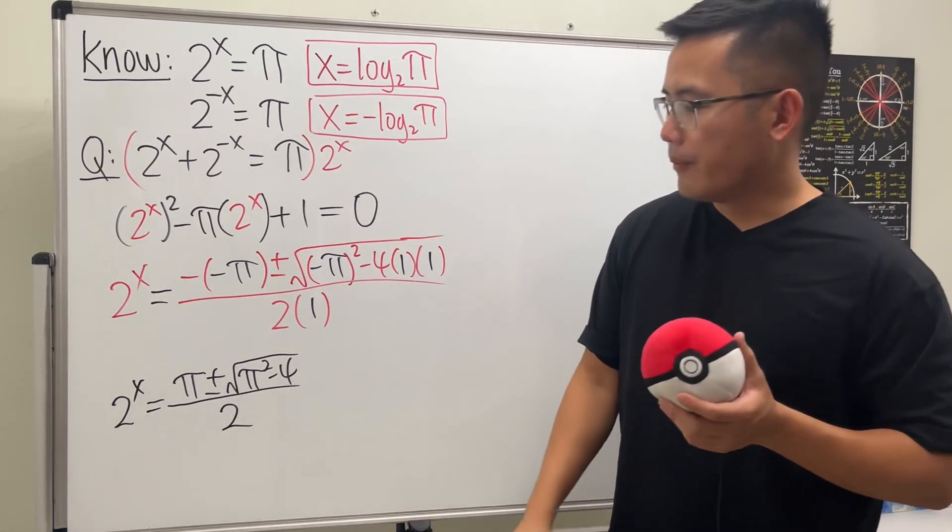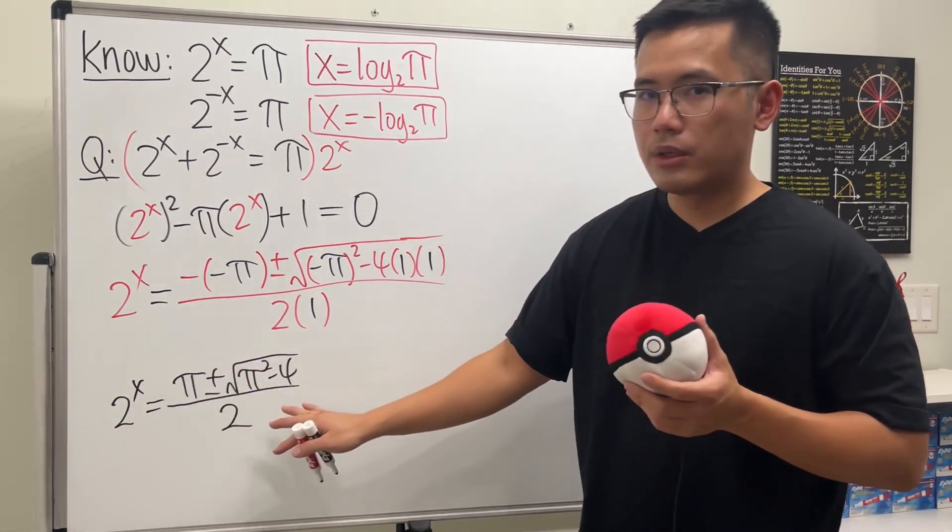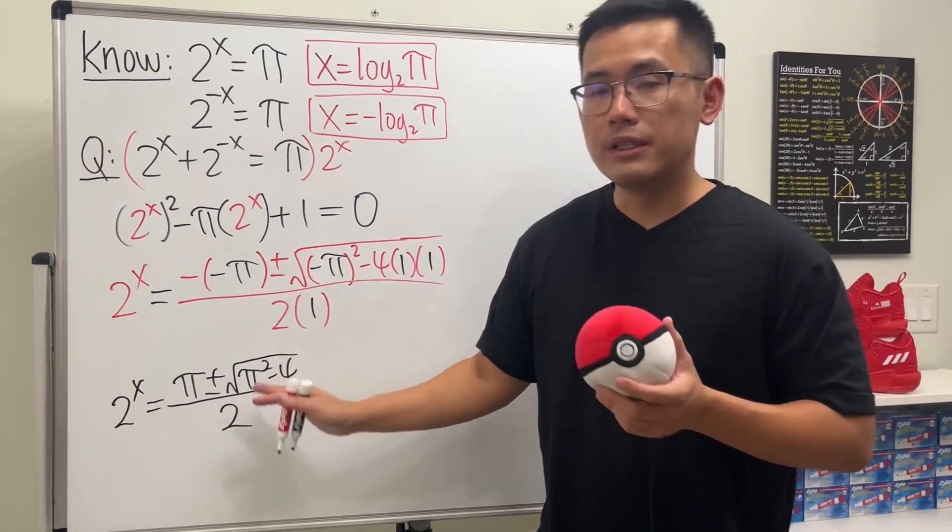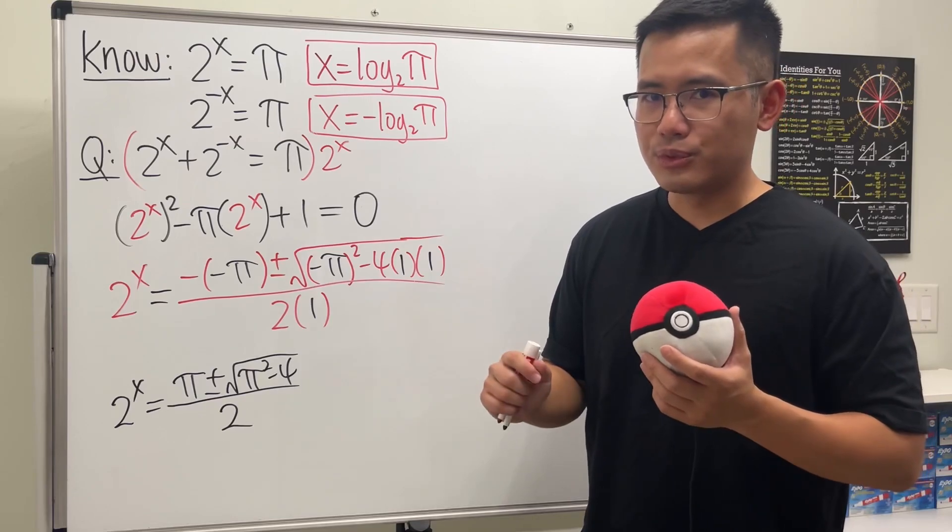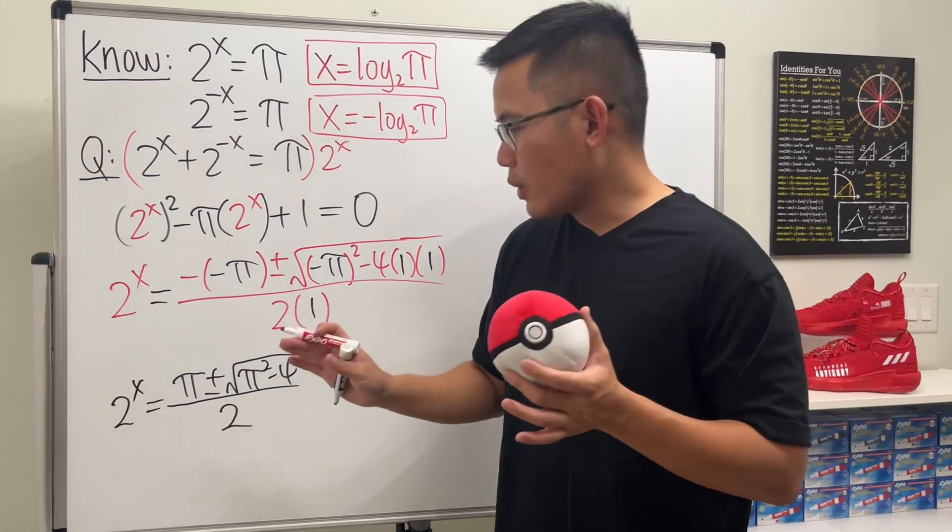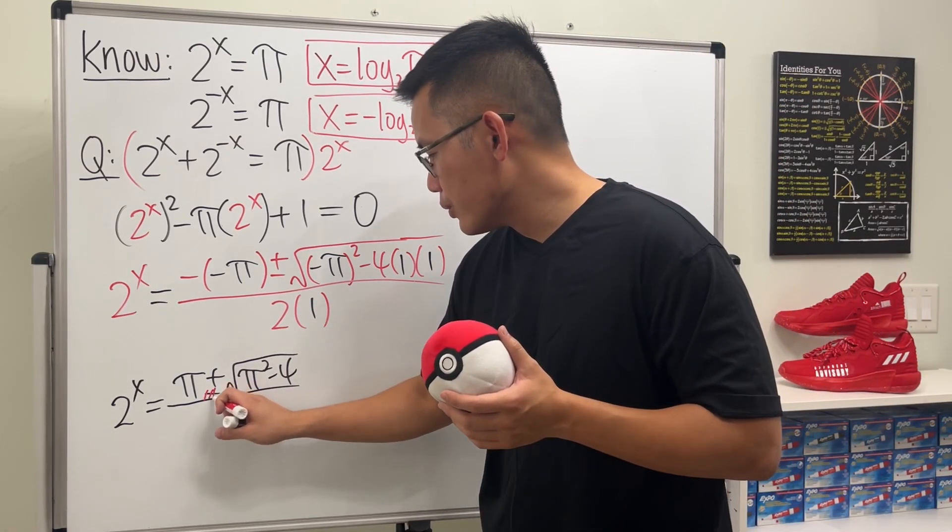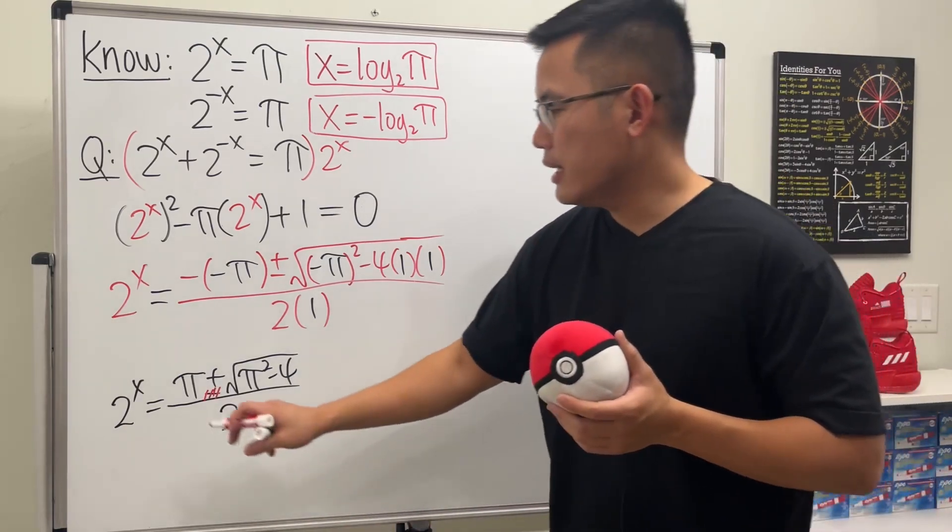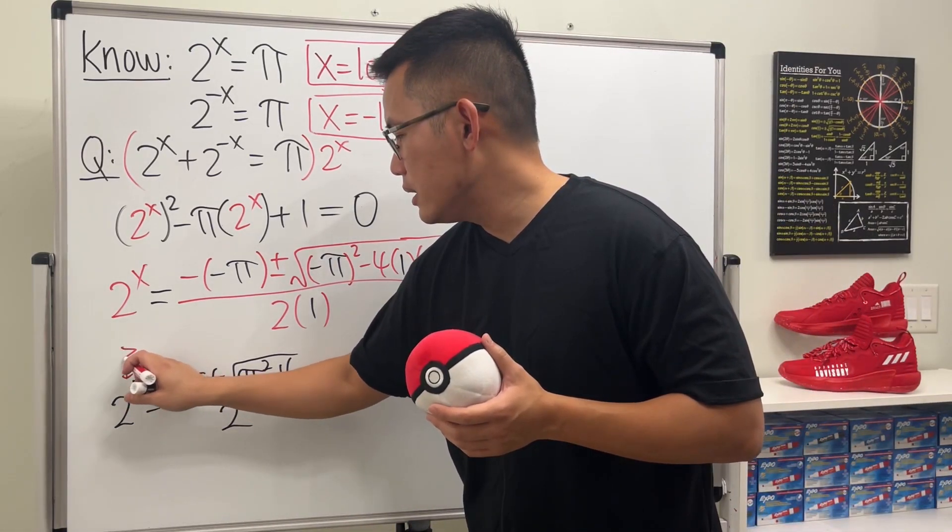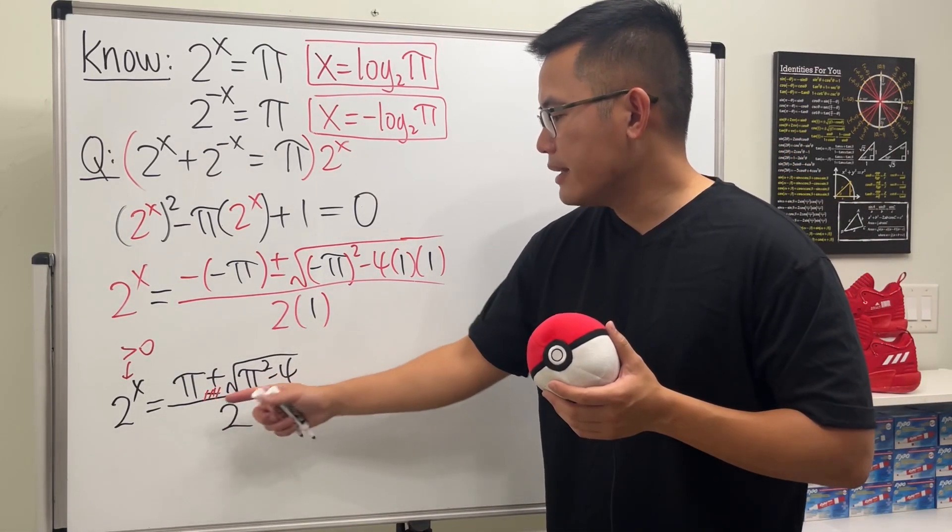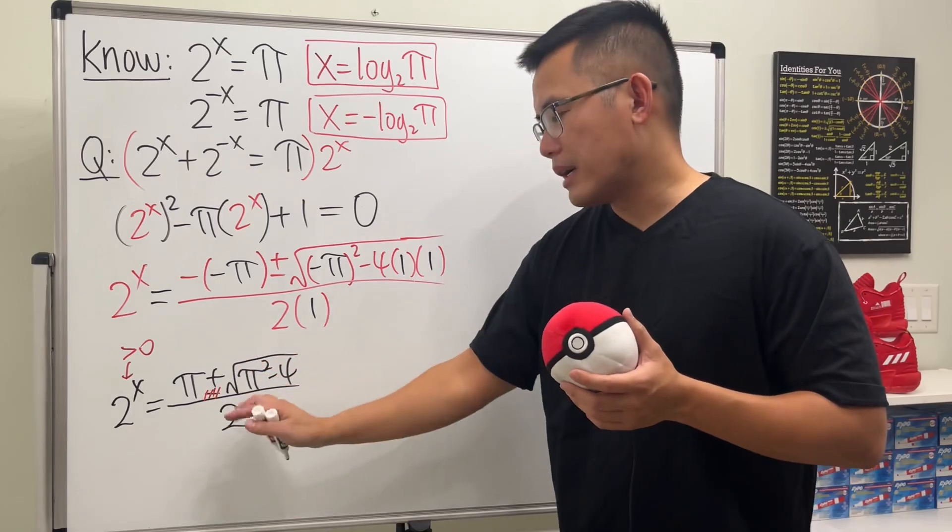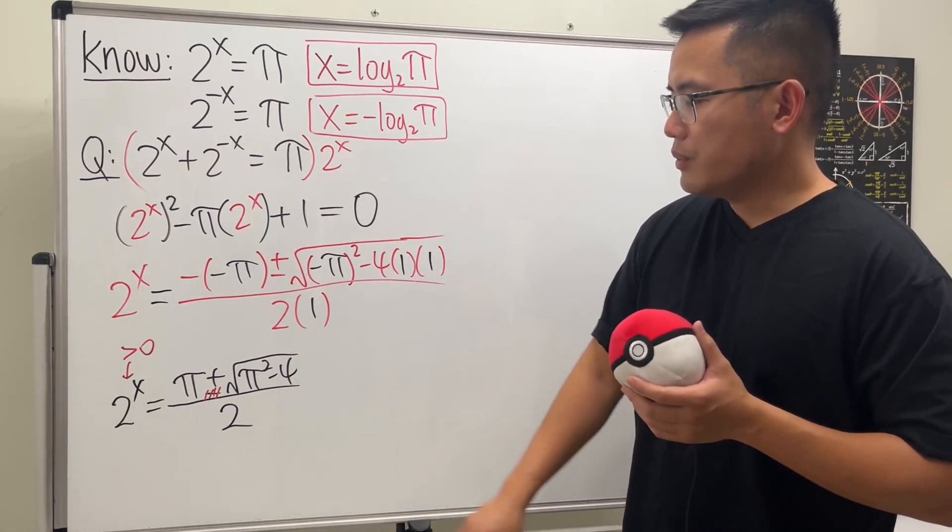But now, here's the deal. When we have 2 to the x is equal to a number, we have to make sure that this number is positive. Otherwise, we actually will get complex solutions. So if you just want real solutions, we are just going to get rid of this. Because 2 to the x, this part has to be positive. So get rid of the negative. Otherwise, pi minus a number bigger than pi, no go.